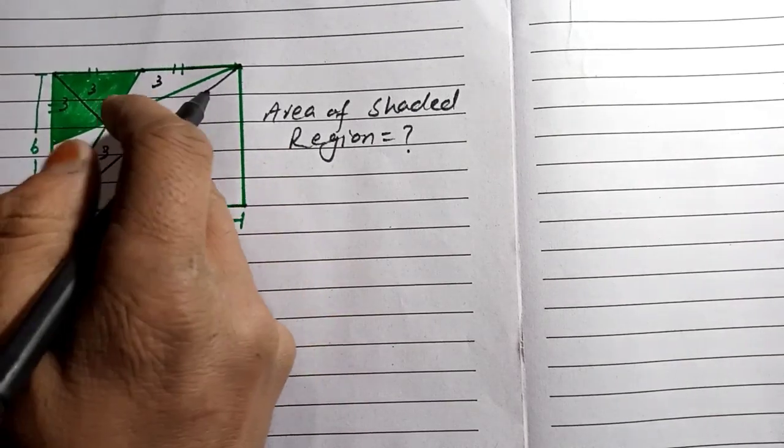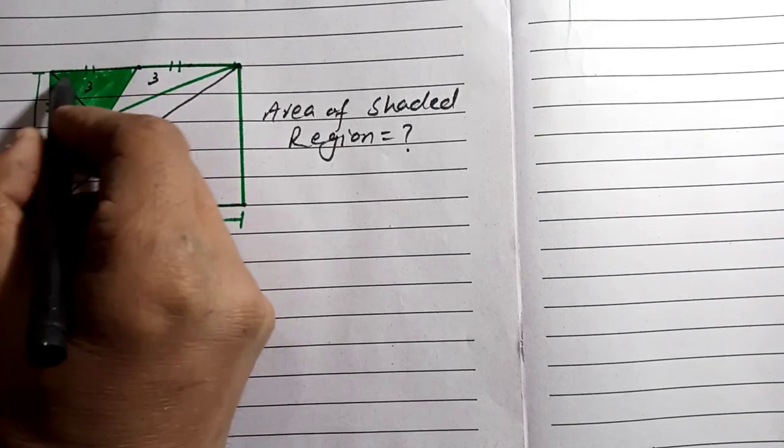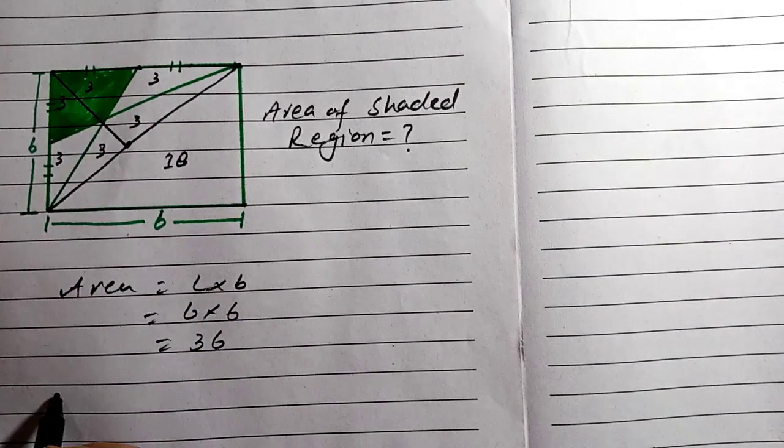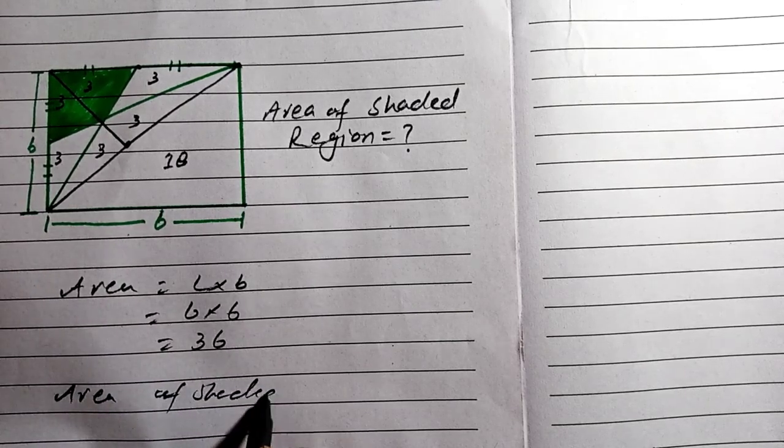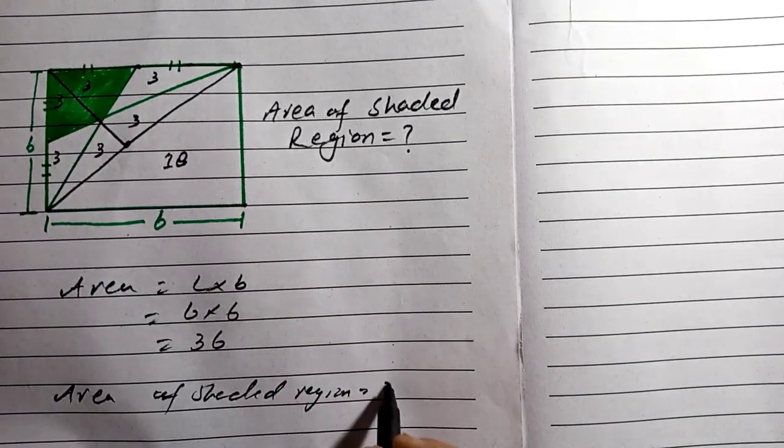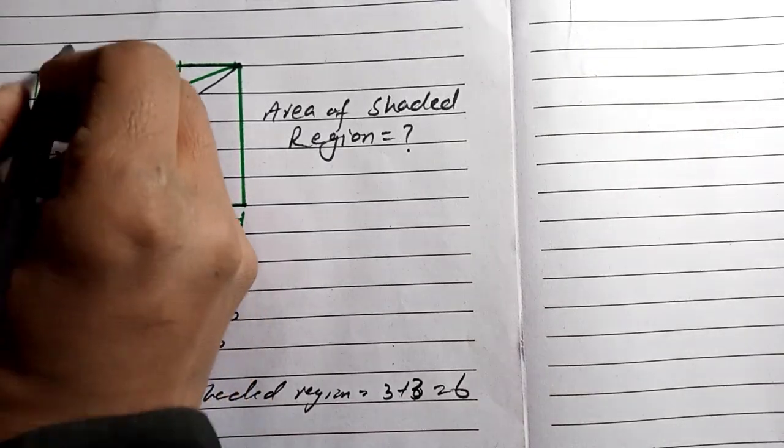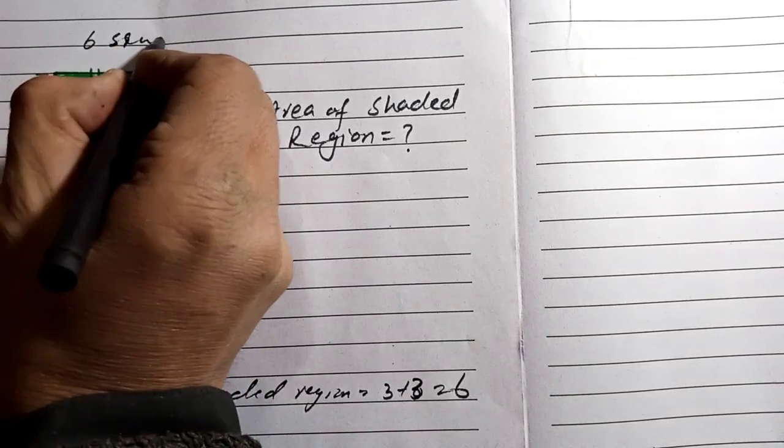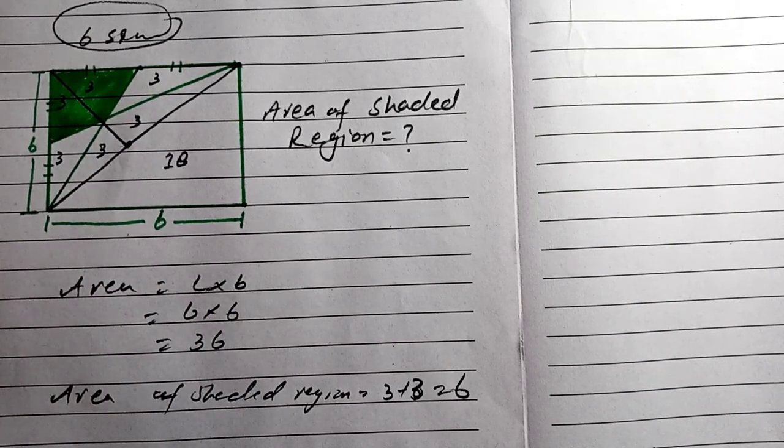Area of shaded region is 3 plus 3 which is 6 square units. This is the total area of this shaded region. Thanks for watching.